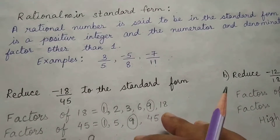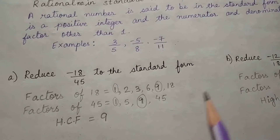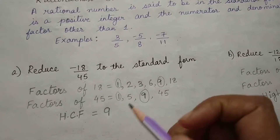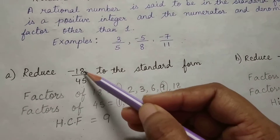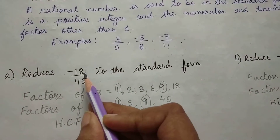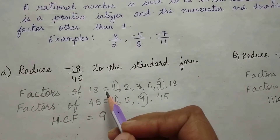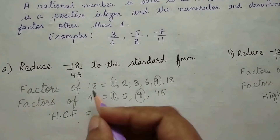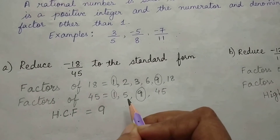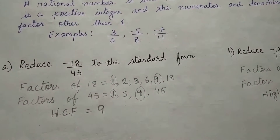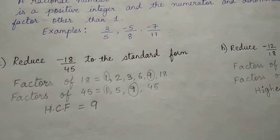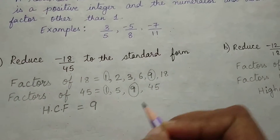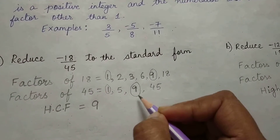Let us follow the procedure of how to reduce any rational number to the standard form. The first step is to find out the highest common factor of the two numbers. Find out the factors of 18: 1, 2, 3, 6, 9, and 18. Factors of 45 are 1, 5, 9, and 45. The common factors are 1 and 9, and the highest is 9. So the HCF is 9.